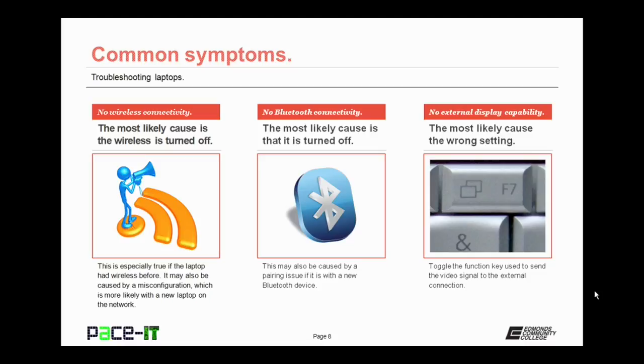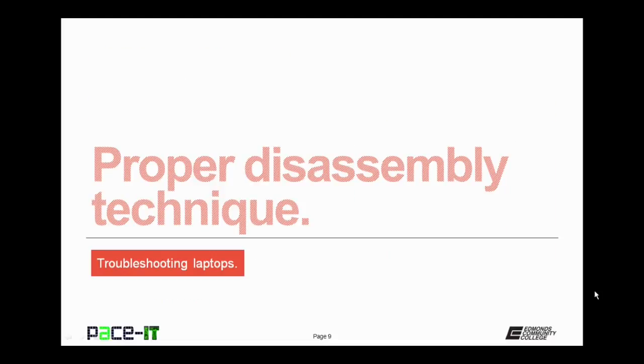If the symptom is that you can't display to an external monitor, the most likely cause is that the function key is not set correctly. Toggle the function key used to send video signal to the external connection several times, and that will usually take care of that symptom. Now let's move on to proper disassembly technique.